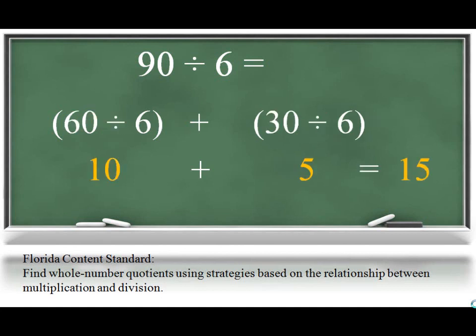Students should also be able to use the distributive property of division to describe this problem. They are still splitting 90 into 60 and 30, but by using division, they are splitting each into groups of 6 using division, instead of finding multiples of 6 using multiplication.